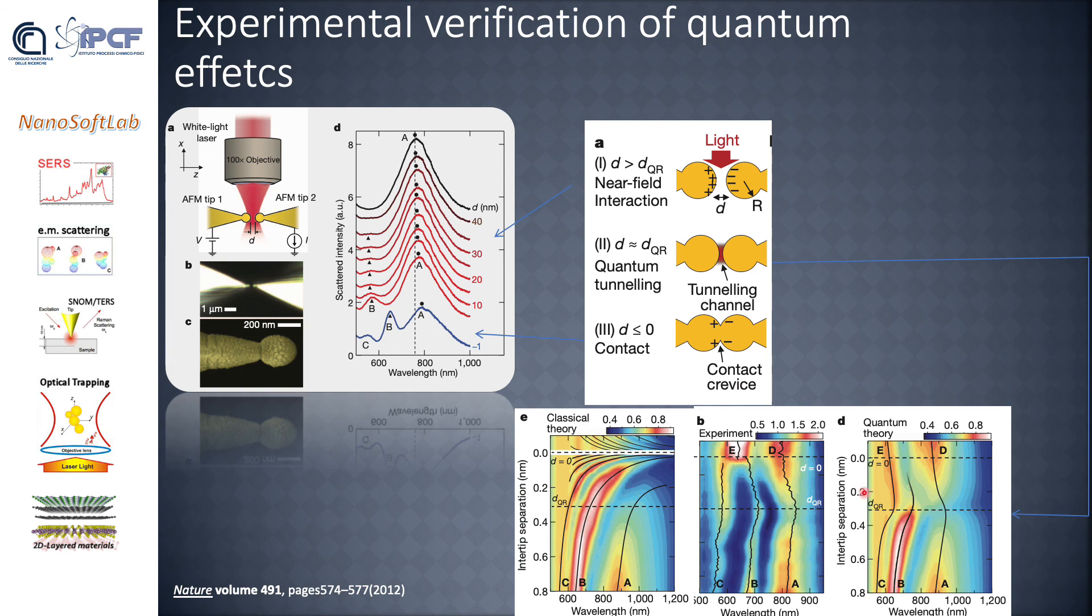In this plot here, we observe that while in the classical theory a continuous redshift of all the modes is expected down to d equal to zero, this is not the case in the experiment. The experiment is very well reproduced by the quantum theory, which predicts an intermediate region in which tunneling occurs and a charge transfer mode when the two particles come in touch.